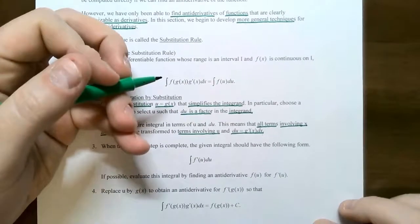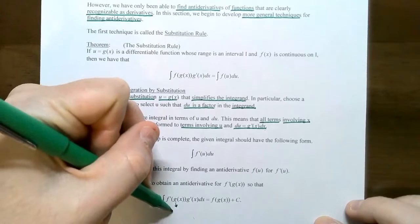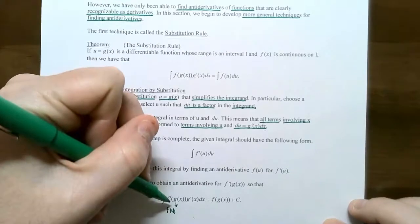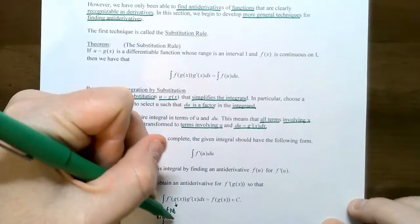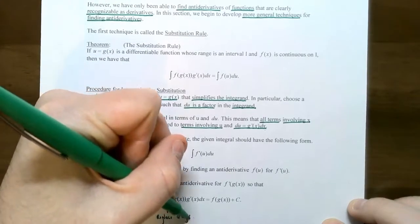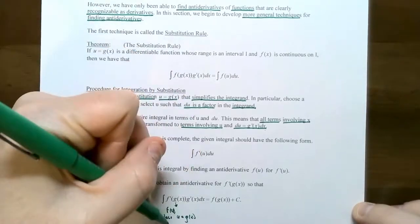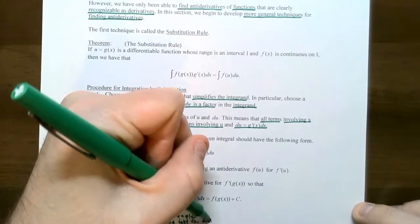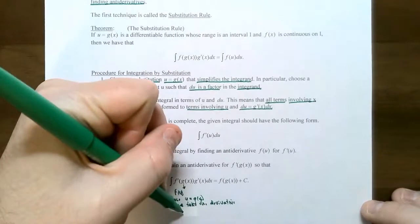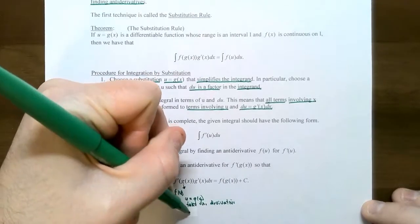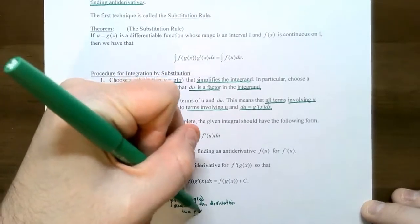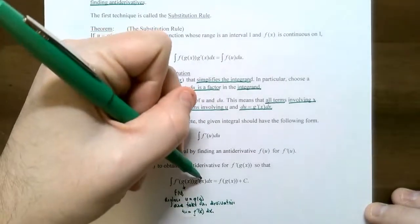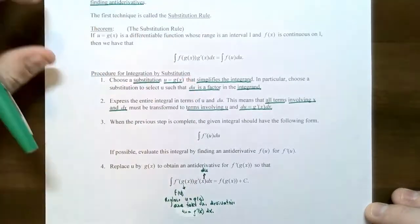To summarize: we make u = g(x) so that we have f(u), meaning we replace u = g(x) and take the derivative of g(x). When you take the derivative, you get du = g′(x)dx, so the g′(x)dx is replaced with du as well.